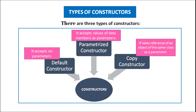Types of constructor. There are three types of constructors: default constructor, parameterized constructor, and copy constructor. A default constructor accepts no parameters. A parameterized constructor accepts values of data members as parameters. A copy constructor also accepts parameters, but in the case of the copy constructor the parameter is a reference to an object of the same class.